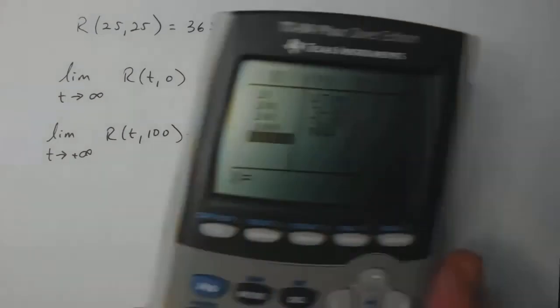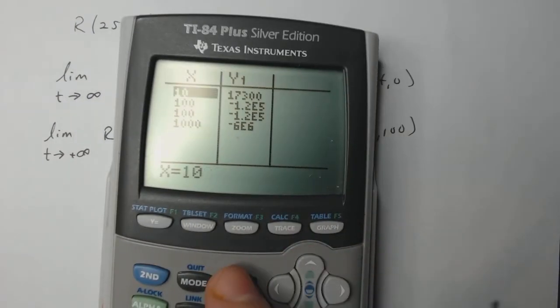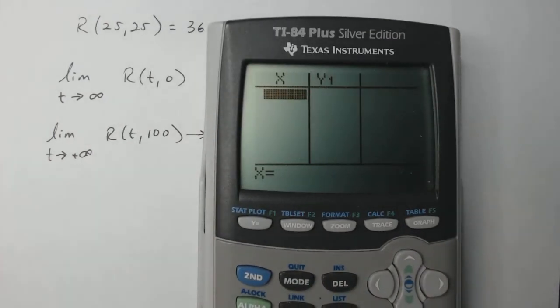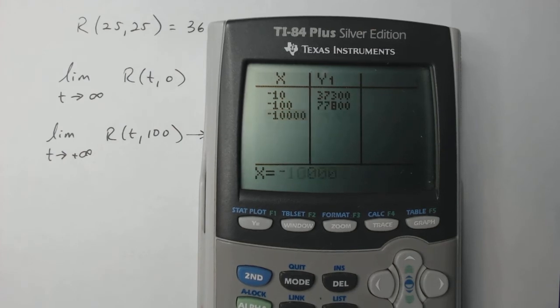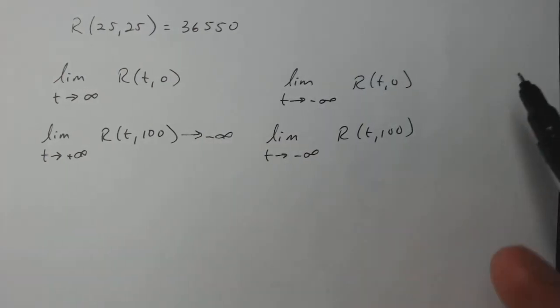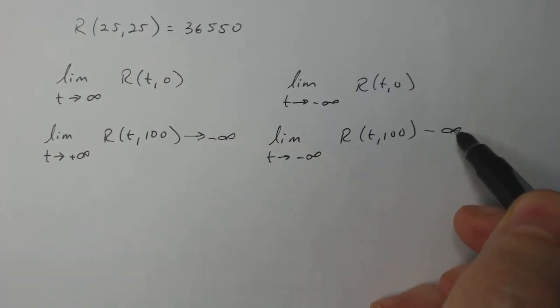Now let's do it going towards negative infinity. Let's delete all these out and go to negative infinity. So negative 10, negative 100, negative 10,000, negative 100,000. There we go, so this also goes off to negative infinity.